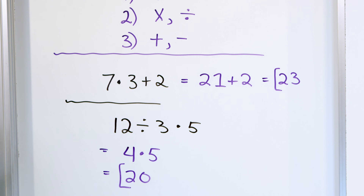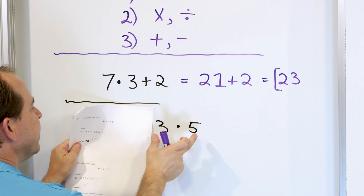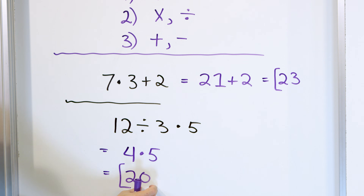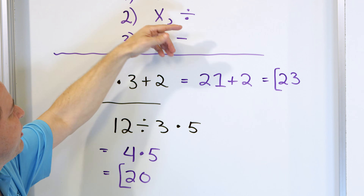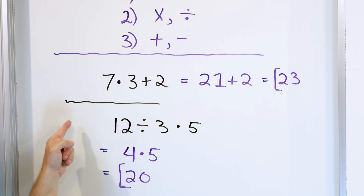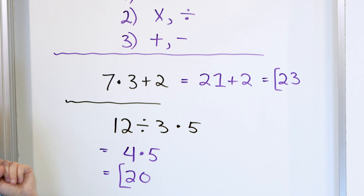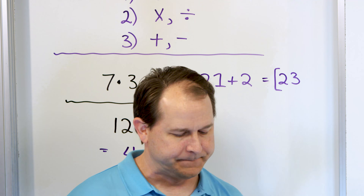What would happen if we go in the wrong order? We got an answer of 20 going left to right correctly. But let's say we do 3 times 5 first — that's 15. Then 12 divided by 15 is definitely not 20, so that would be the wrong answer. So we do the order of operations in order, and when we have same-level operations, we perform them left to right — just like reading a book. The same exact thing applies to addition and subtraction: when we have adding and subtracting at the same level, we read it left to right.